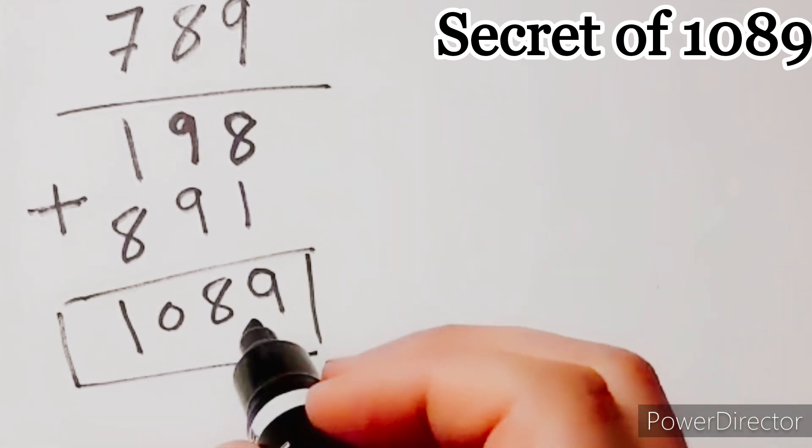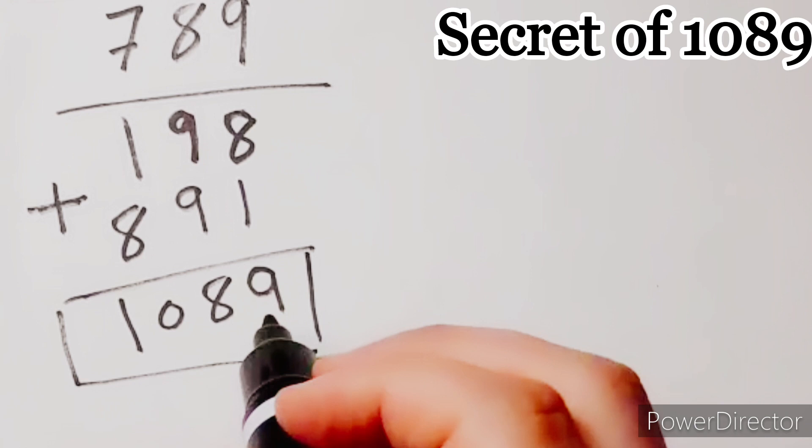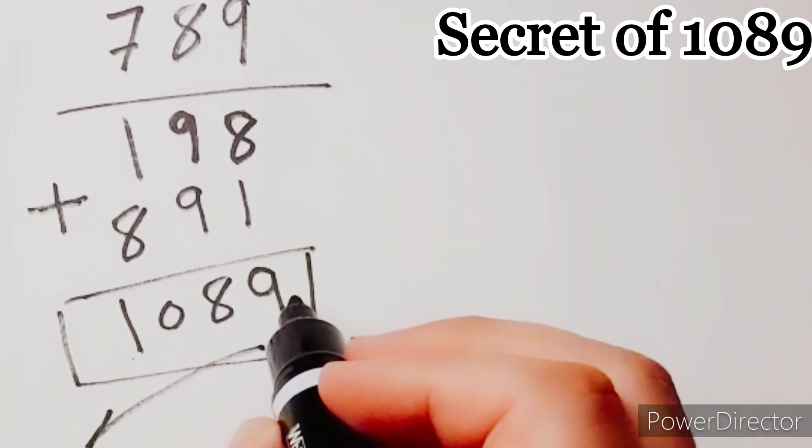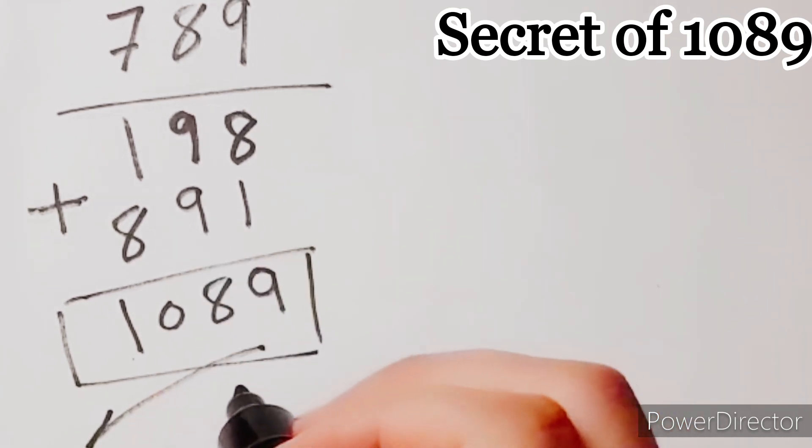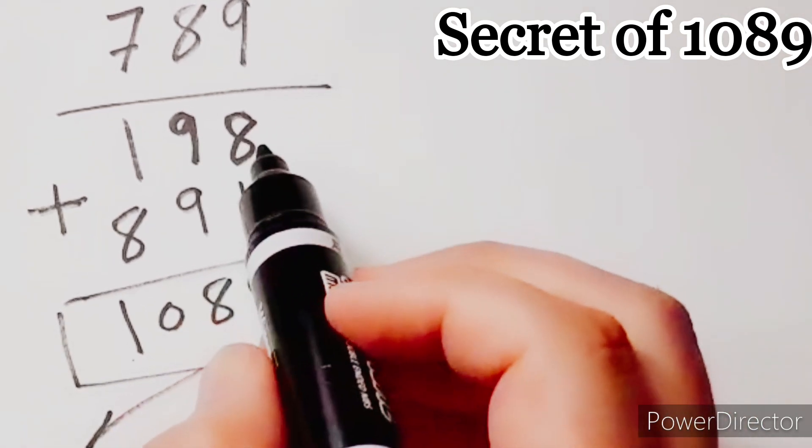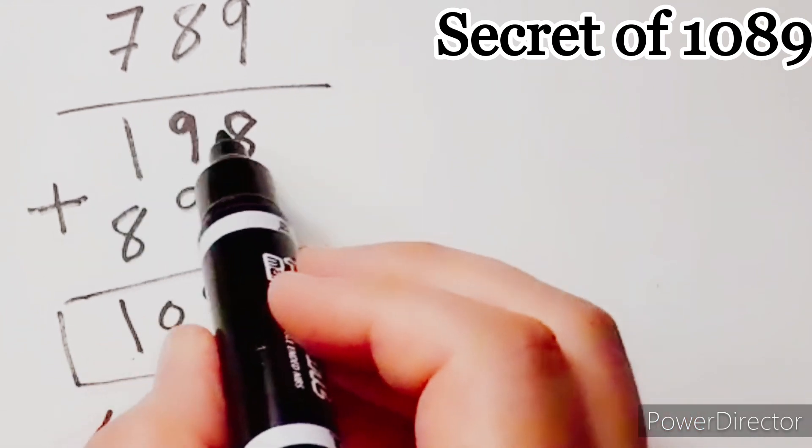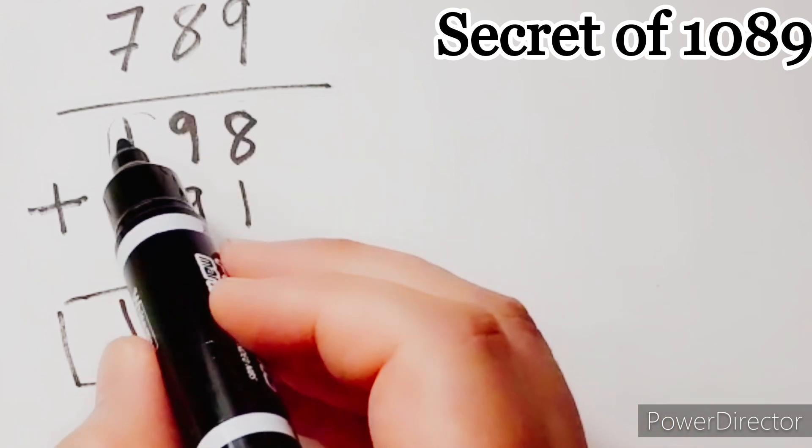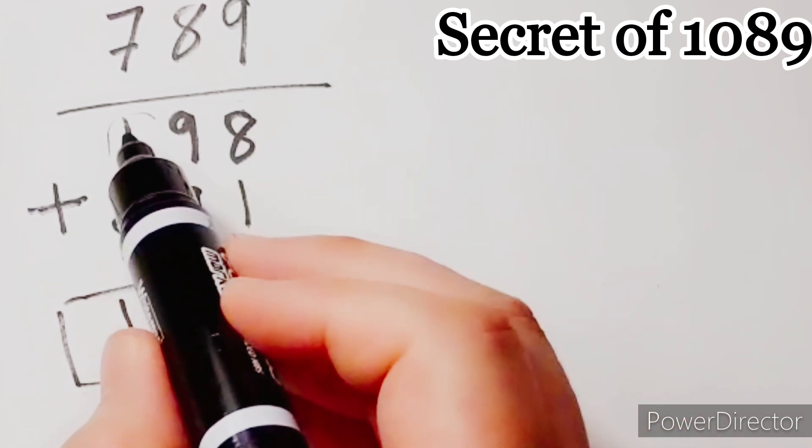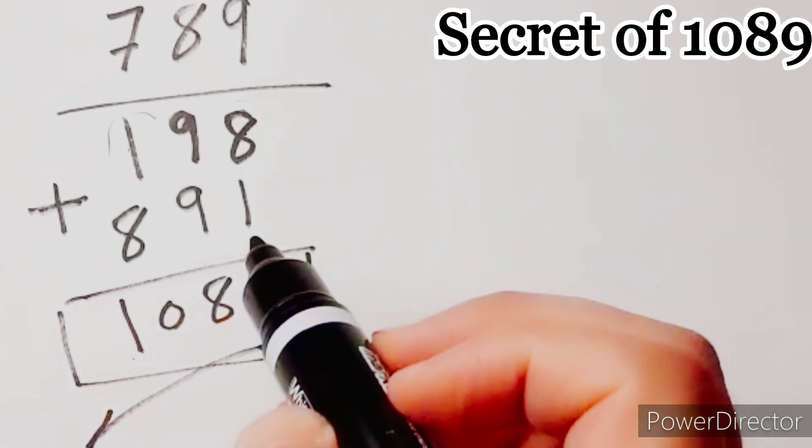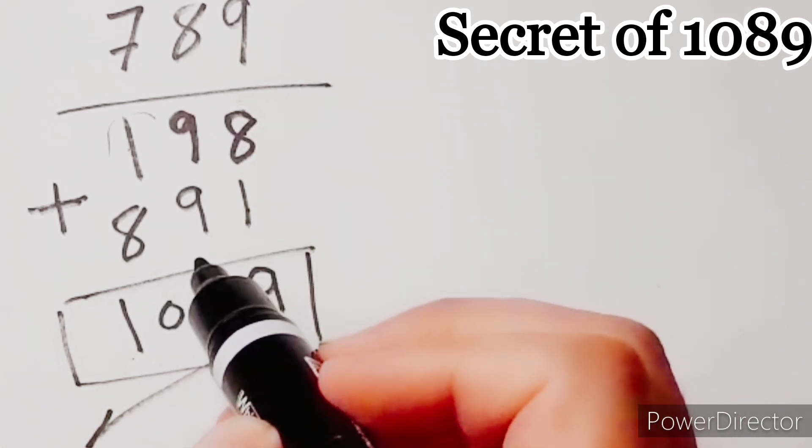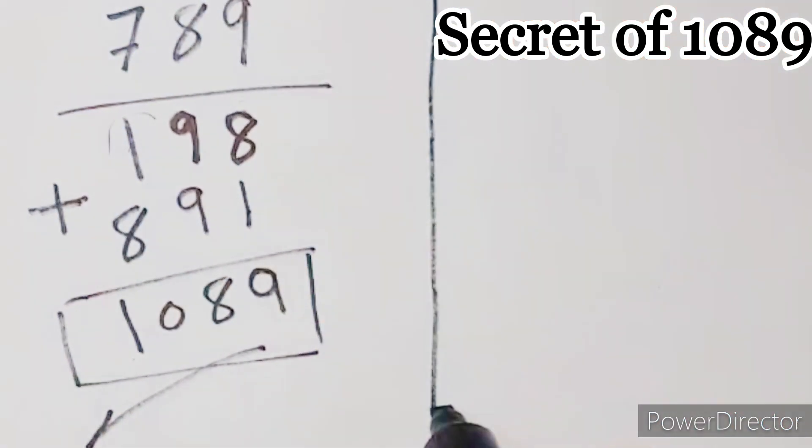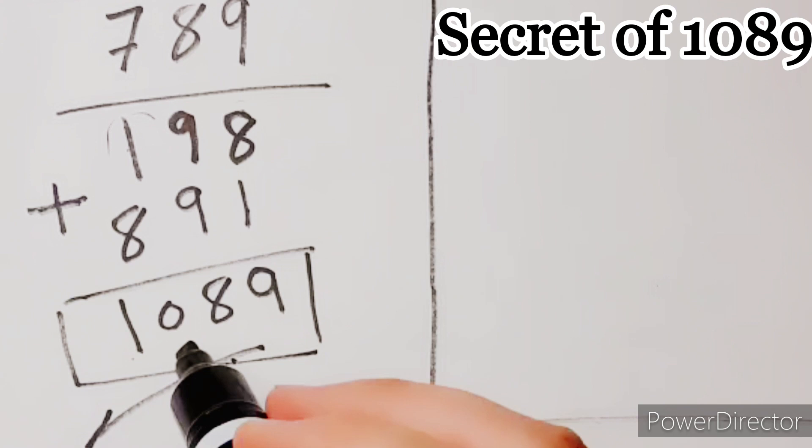In each case, all times, the result will be the same number, 1089. And we can notice that in this number, the hundreds and units, their sum is 9. 1 plus 8 equals 9, or 8 plus 1 equals 9. Let's go to another example, to find the same number, 1089.